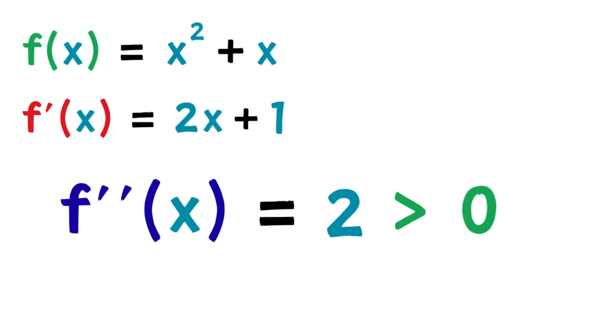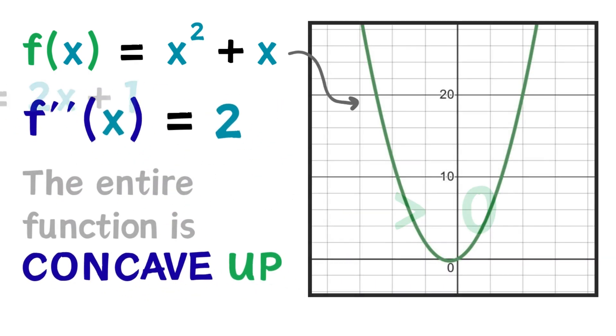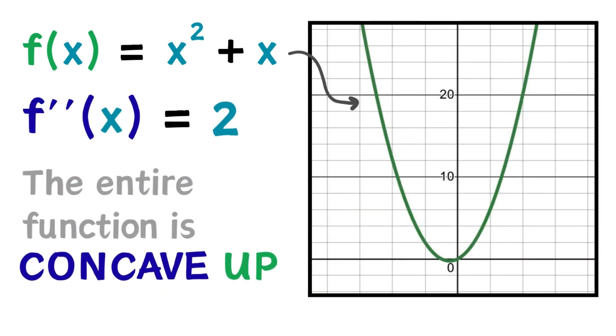Now, 2 is greater than 0. The second derivative is positive, so we know that the function must be concave up. And indeed, we see that our function represents a parabola.